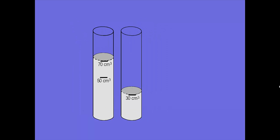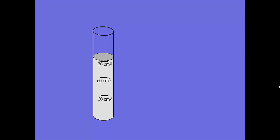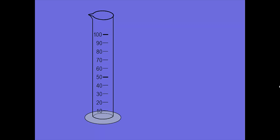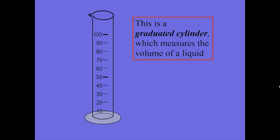By doing this, we can create markings based on how high the water is to indicate the volume at that height. These markings are called graduations on the side of a cylinder, and they tell you the volume of liquid filled to that mark — this is how a graduated cylinder is made. The one shown here has markings corresponding to the diameter and height: at 20 centimeters, the volume is 100 cubic centimeters. A graduated cylinder goes slightly above that with a pouring spout, and it's a common piece of equipment used in laboratories around the world.